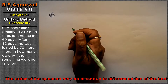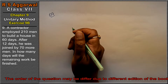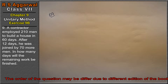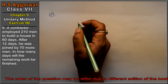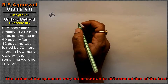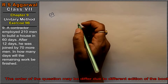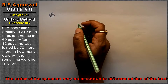Let's do question number 9 of Exercise 9B, that is unitary method. Question number 9 is: a contractor employed 210 men to build a house in 60 days. After 12 days it was found that 70 more men were added. In how many days will the remaining work be finished?